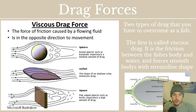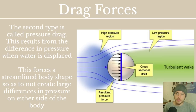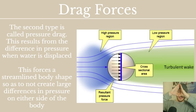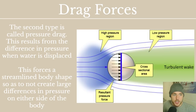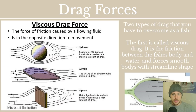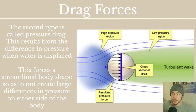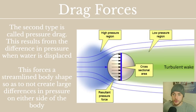Through both of these types of drag, it should immediately become obvious why fast-swimming fish have that streamlined shape — because it reduces viscous drag and it reduces pressure drag. So instantly you're talking about using less energy to move faster through the water, and you're talking about how advantageous that is.